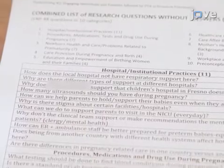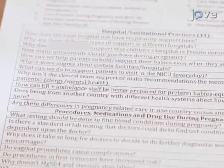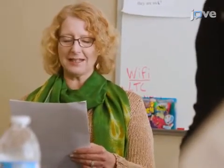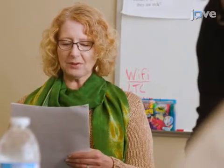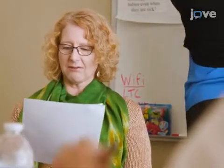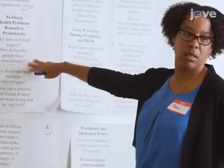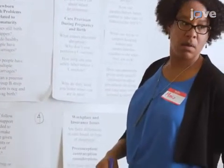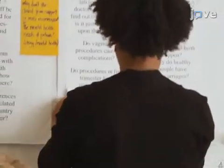Provide each participant with a copy of the finalized questions organized by topic. Read the questions out loud, pausing to ask if they are phrased correctly with the right wording — spend about 20 minutes on this task. Intermittently ask if the discussion has brought any other questions to mind; if so, write them on a card and ask participants to place the card under the appropriate topic heading, or start a new heading if needed.